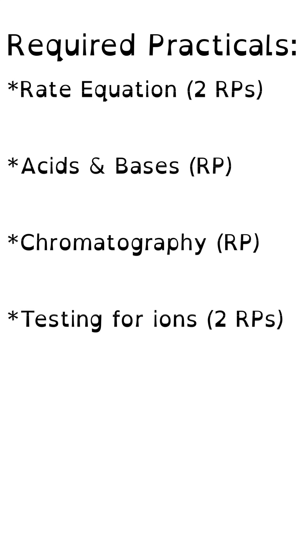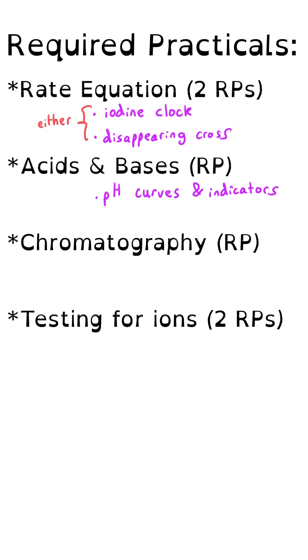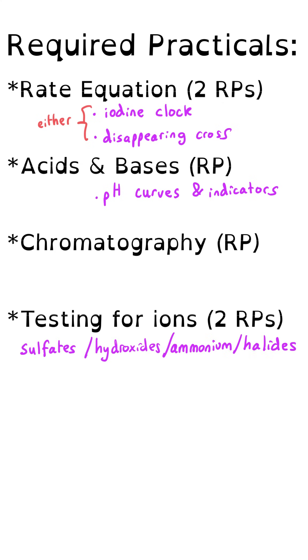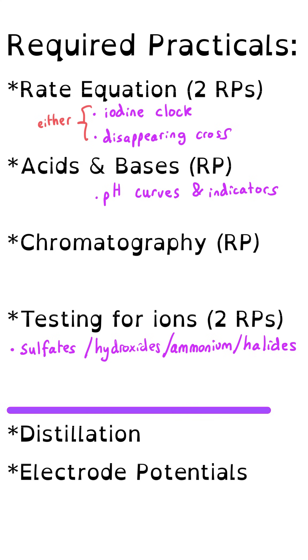There are 12 required practicals that could be assessed on paper 3, so how do you prioritise? The top four more likely to come up are: the iodine clock and disappearing cross from rate equations — I think only one of those will come up; the pH curves required practical from acids and bases; chromatography, which I think is highly likely; and the sulfate, hydroxide, and halide testing for ions rather than the transition metals version. Still possible but much less likely are distillation and the electrode potentials required practical.